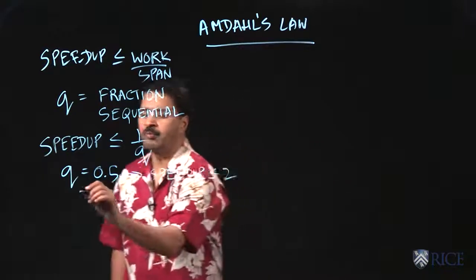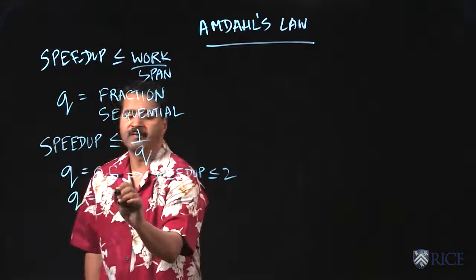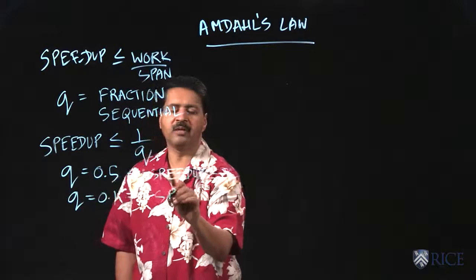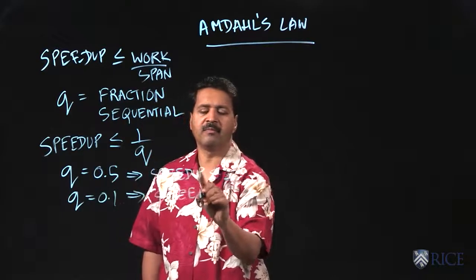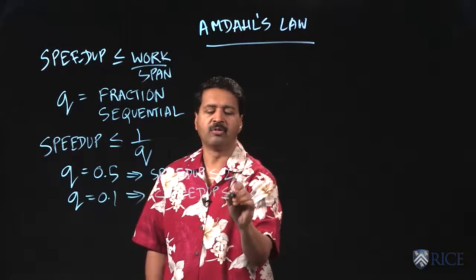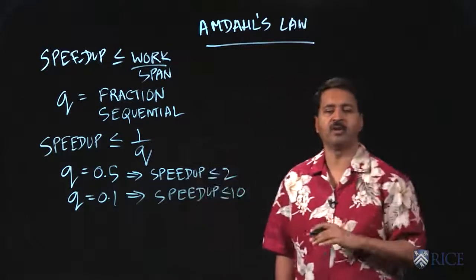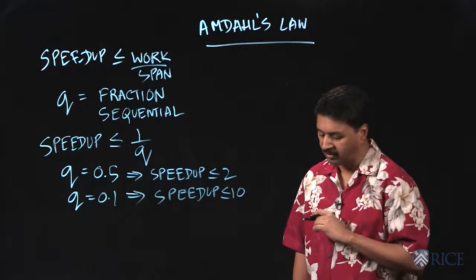If q was 0.1, the speedup will be at most 10 because 10% of your workload is going to be sequential.